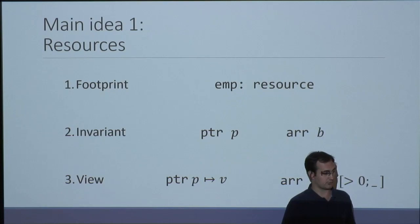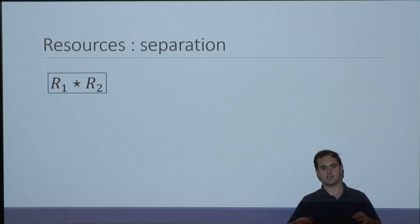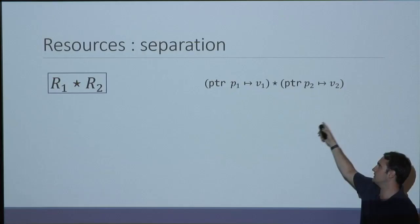Now that we have our resources, we can separate them. In separation logic we have this very pervasive star operator, which lets us define the heap as a collection of things that are disjoint from each other. This is the basic building block we're going to use to build our Steel framework. For instance, in separation logic you would write a heap containing two pointers pointing to different values, and you can see those pointers are not aliased because of the star operator.